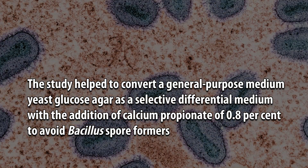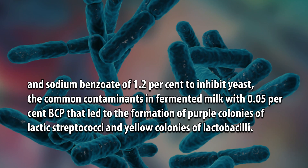The study helped to convert a general-purpose medium, yeast glucose agar, into a selective differential medium with the addition of calcium propionate at 0.8% to avoid Bacillus spore formers, and sodium benzoate at 1.2% to inhibit yeast — the common contaminants in fermented milk — with 0.05% BCP, leading to the formation of purple colonies of lactic streptococci and yellow colonies of lactobacilli.